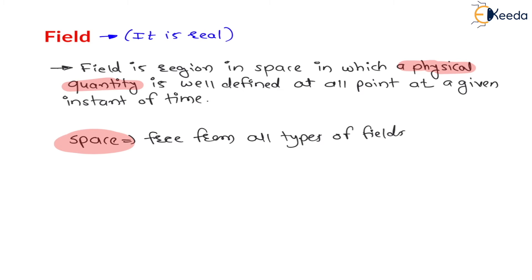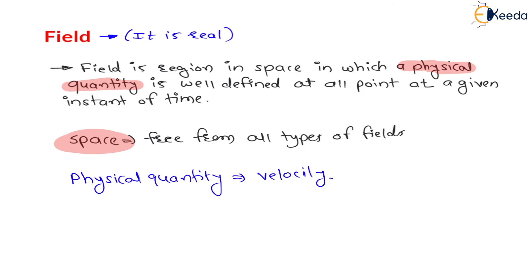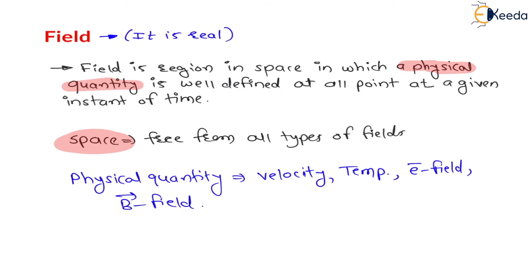There are various types of physical quantities. For example: velocity is one physical quantity, temperature is also a physical quantity. We can have an electrical field — that is the E field. We can have a magnetic field — that is the B field. We can have density, force. All these are physical quantities. So field is a region in space in which a physical quantity is well defined.